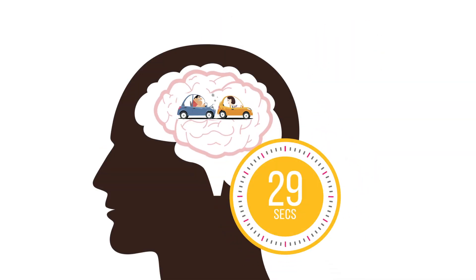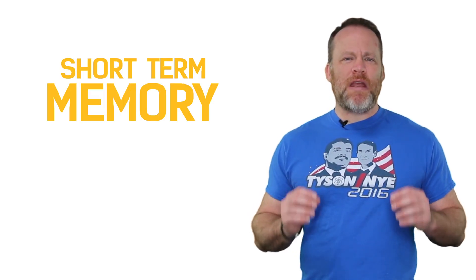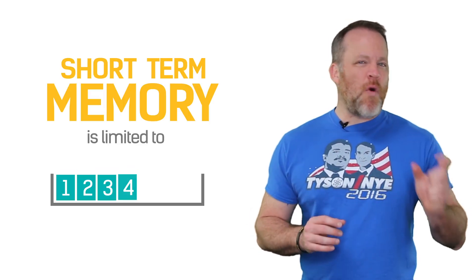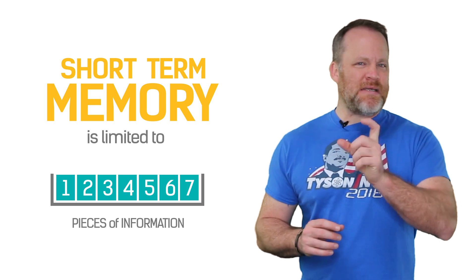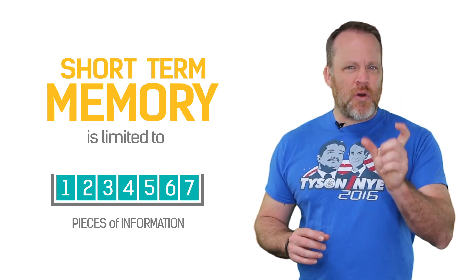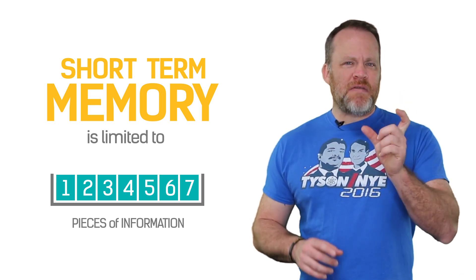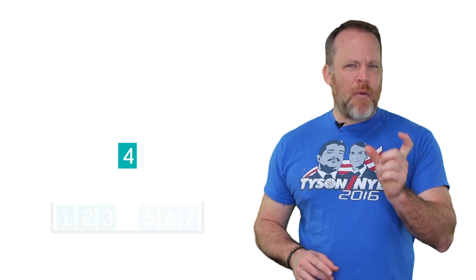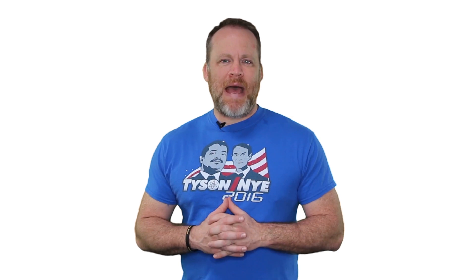Before we give steps on how to improve your long-term memory, what is long-term memory? Long-term memory is anything that's been in your memory for longer than 30 seconds. Short-term memory capacity is limited to about four to seven pieces of information held in your short-term or working memory. But if something can be remembered long enough, it makes it to your long-term memory, and long-term memory capacity is almost unlimited.